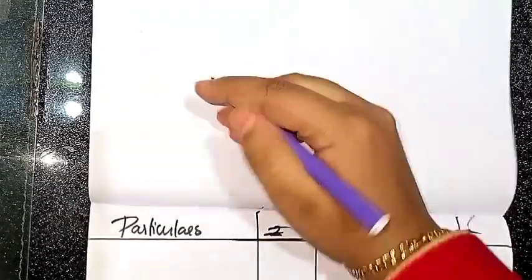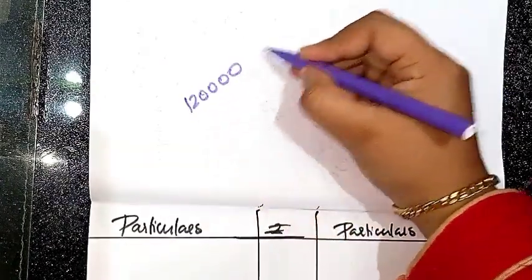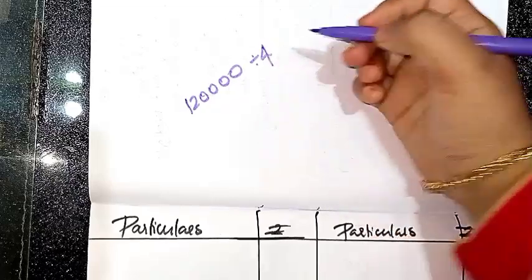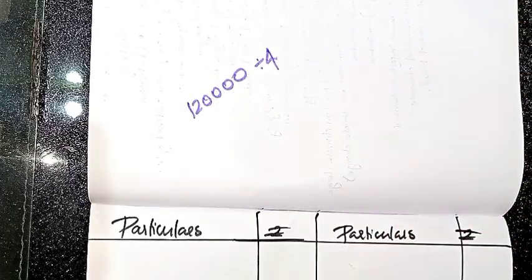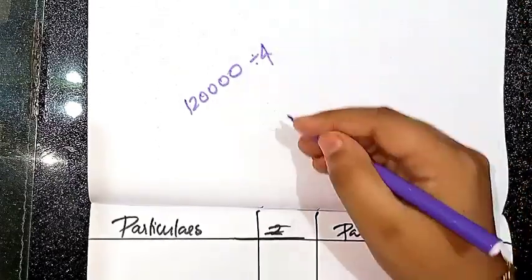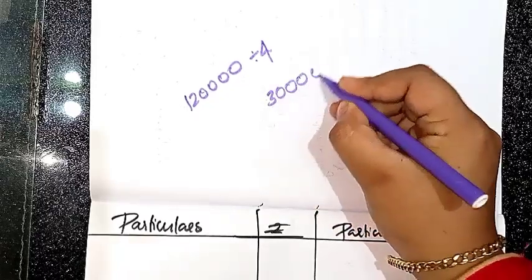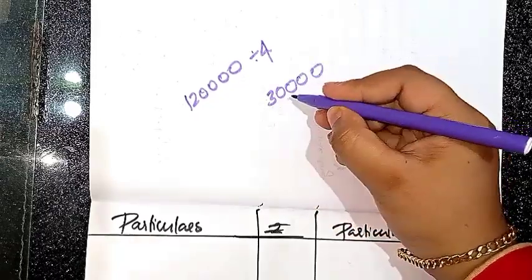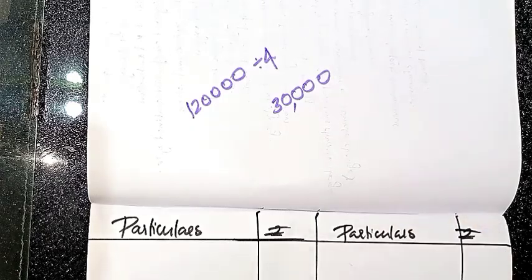Then we can write: ₹1,20,000 divided by 4. So each installment is ₹30,000. In the next installment, we will insert this into the account. In year 1, we are going to apply 12% interest.